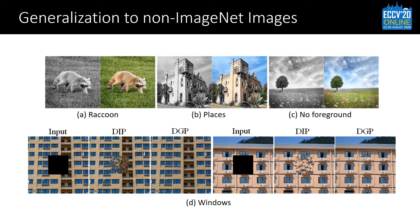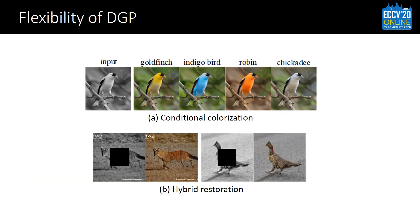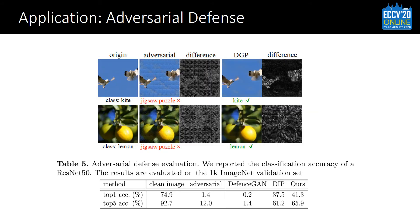Our method generalizes to out-of-domain images. Here shows some examples like images from a non-ImageNet category or from a different dataset. The two window examples show that deep generative prior is pretty good at filling the missing patches in harmony with the context. Our method also allows more flexible restoration, like conditional colorization and hybrid restoration. We also use deep generative prior to remove adversarial perturbations for adversarial defense. Our method effectively removes most perturbations and significantly improves the classification accuracy.